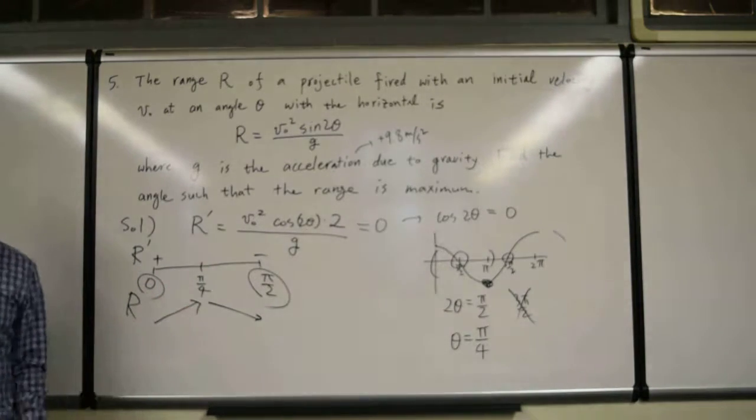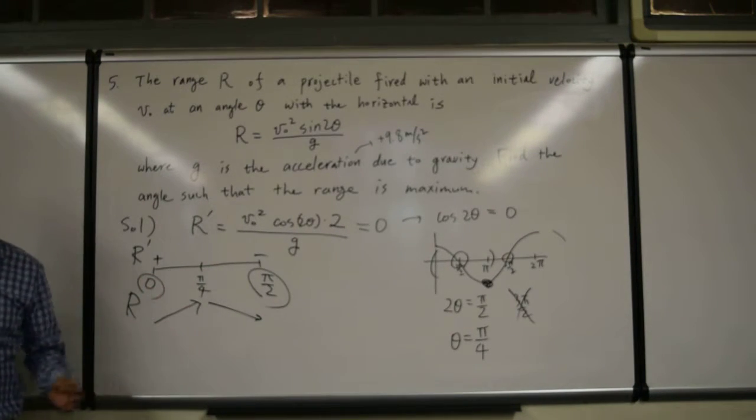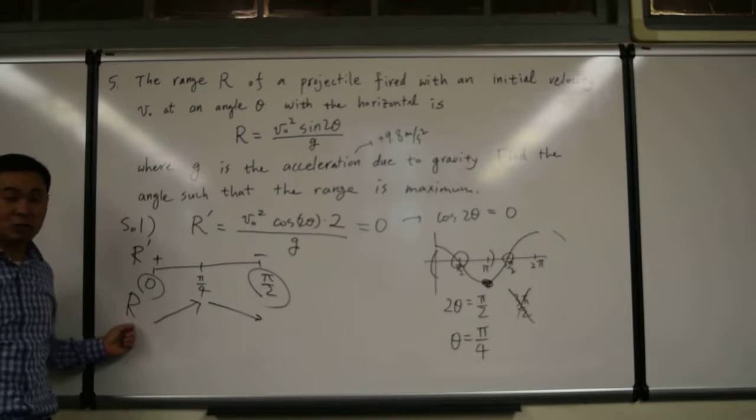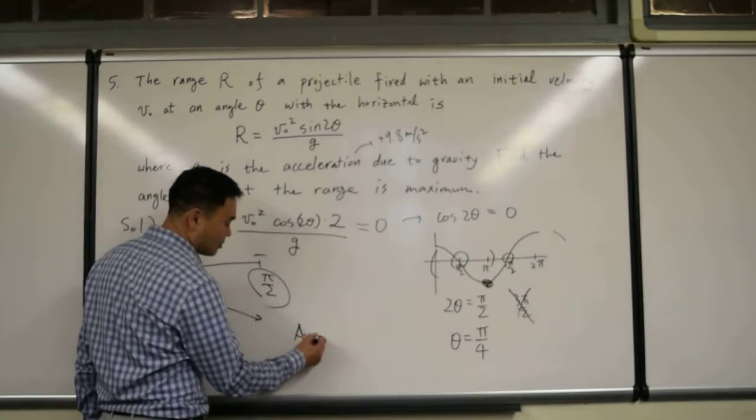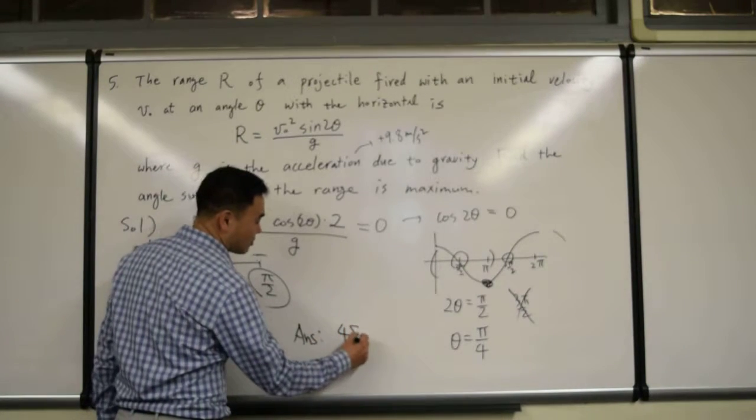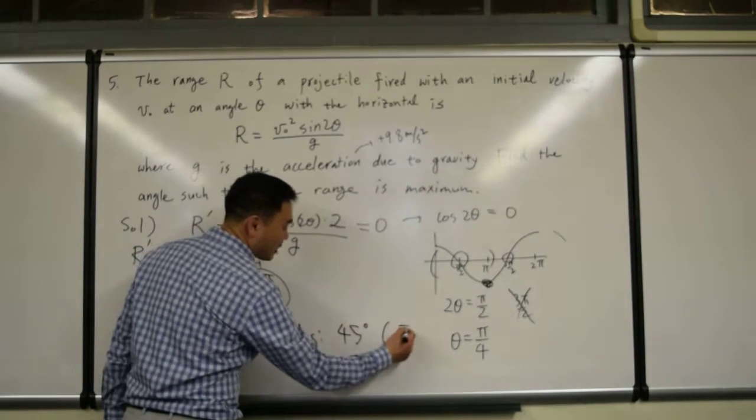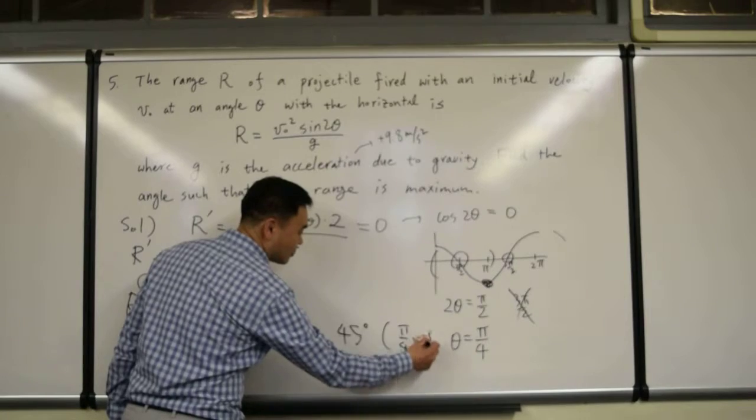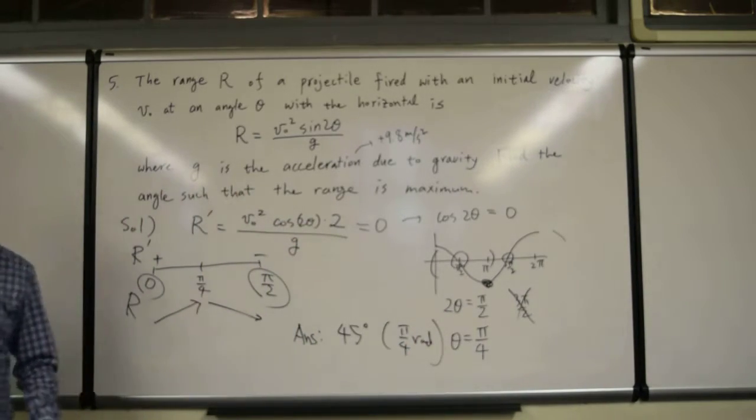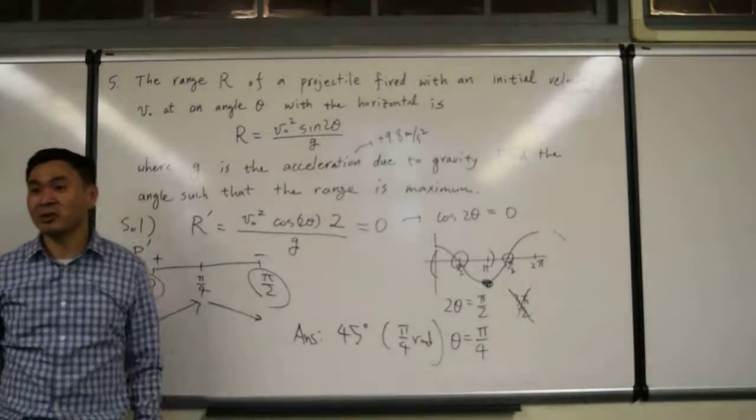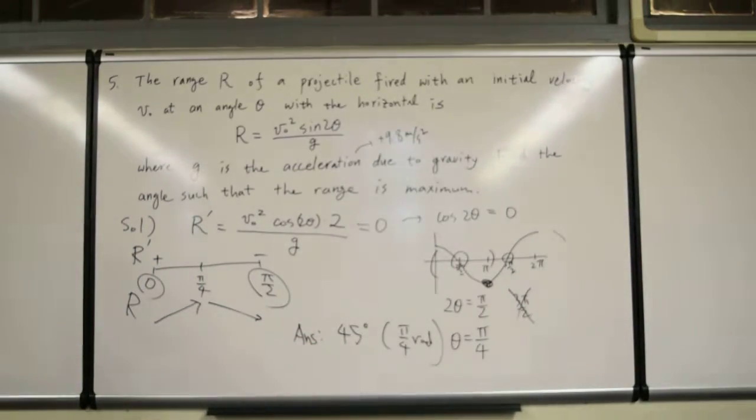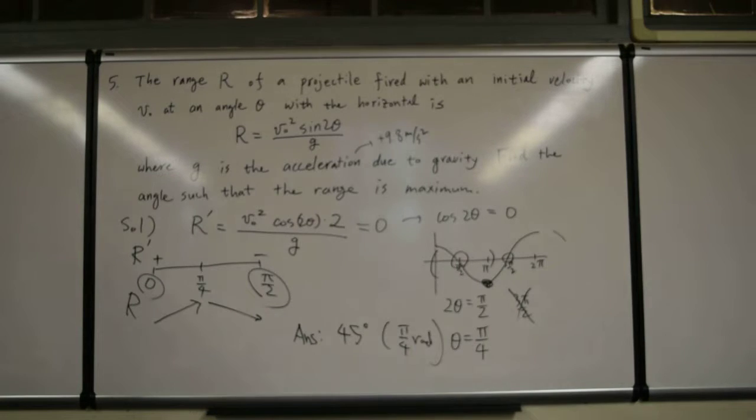Therefore, we've shown that at pi over 4, this function R reaches its maximum. Okay. So the answer is 45 degrees, or pi over 4 radians. Okay. So we've verified what we already knew, and it's kind of cool.